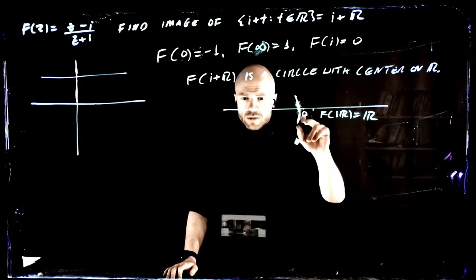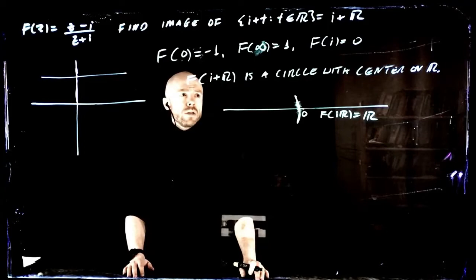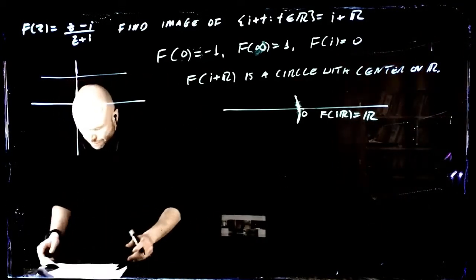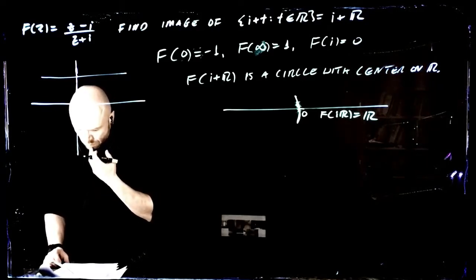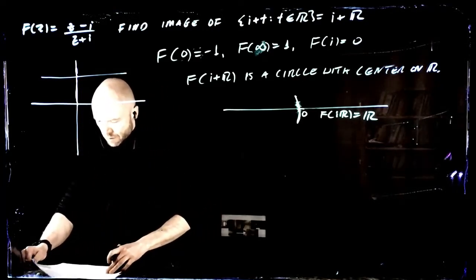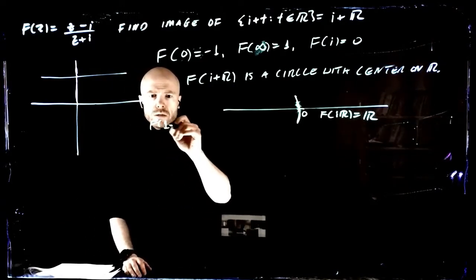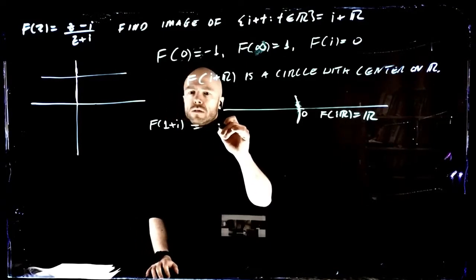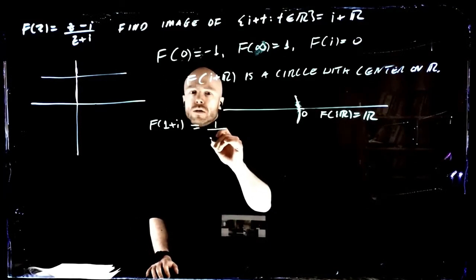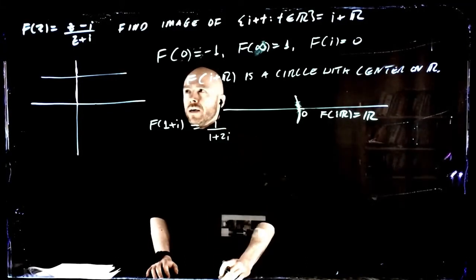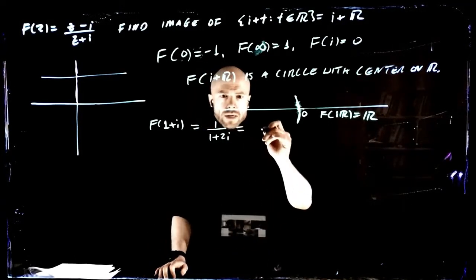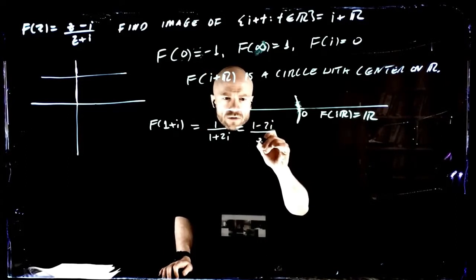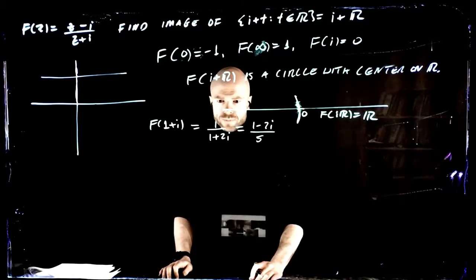Zero is this point right here. What else? What are the easy values? Let's do f of 1 plus i. If we put that in, we're just going to get 1 over 1 plus 2i. Let's clean that up, so that's the same as 1 minus 2i over 5.